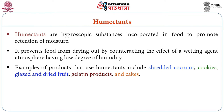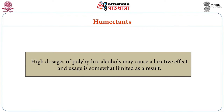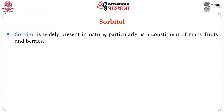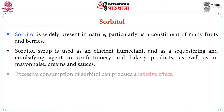Examples of products that use humectants include shredded coconut, cookies, glazed and dried fruit, gelatin products, and cakes. The high dosage of polyhydric alcohol may cause a laxative effect and usage is somewhat limited as a result. The important humectant is sorbitol. It is widely present in nature, particularly as a constituent of many fruits and berries. Sorbitol syrup is also used as an efficient humectant and as a sequestering and emulsifying agent in confectionery and bakery products, as well as mayonnaise, creams, and sausages. Excessive consumption of sorbitol can produce a laxative effect.